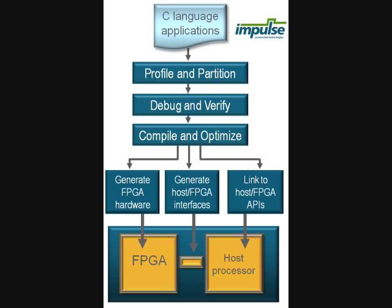Impulse-C is a programming environment for C language programming of FPGAs. It allows us to profile and partition applications, debug and verify correct behavior, then compile and optimize to create partitioned applications between software running on a processor and hardware running in an FPGA.